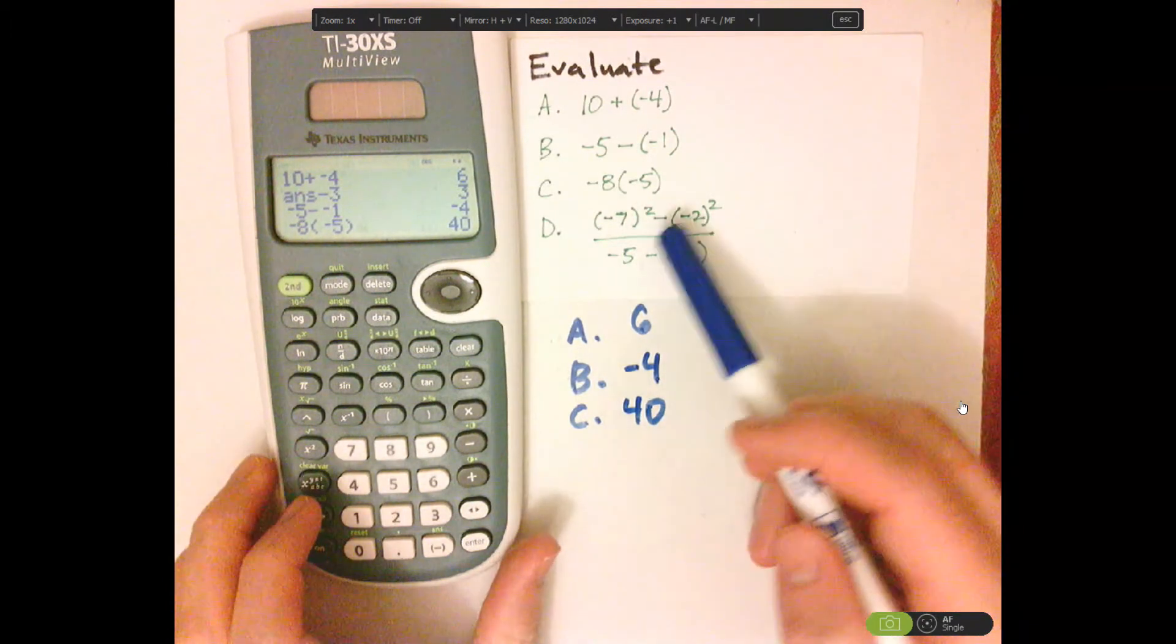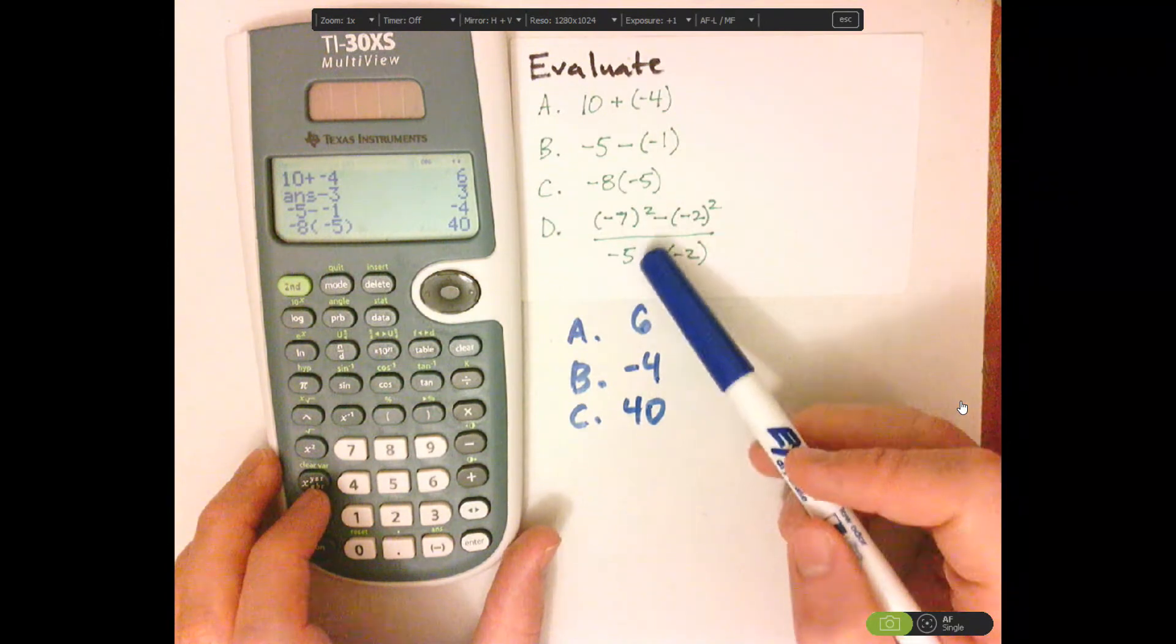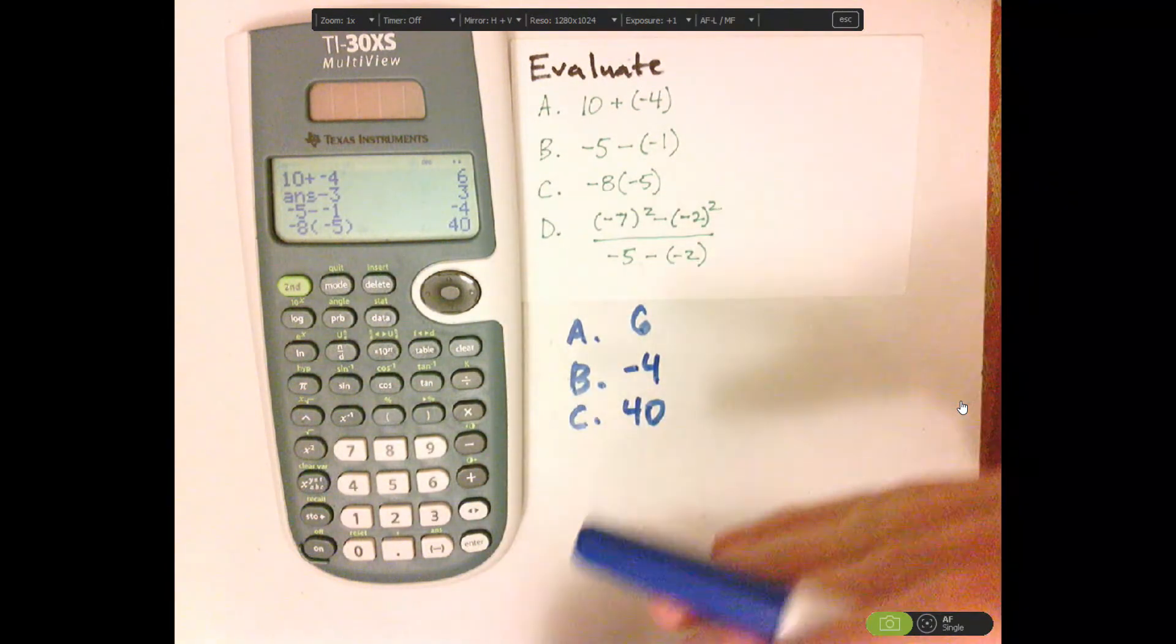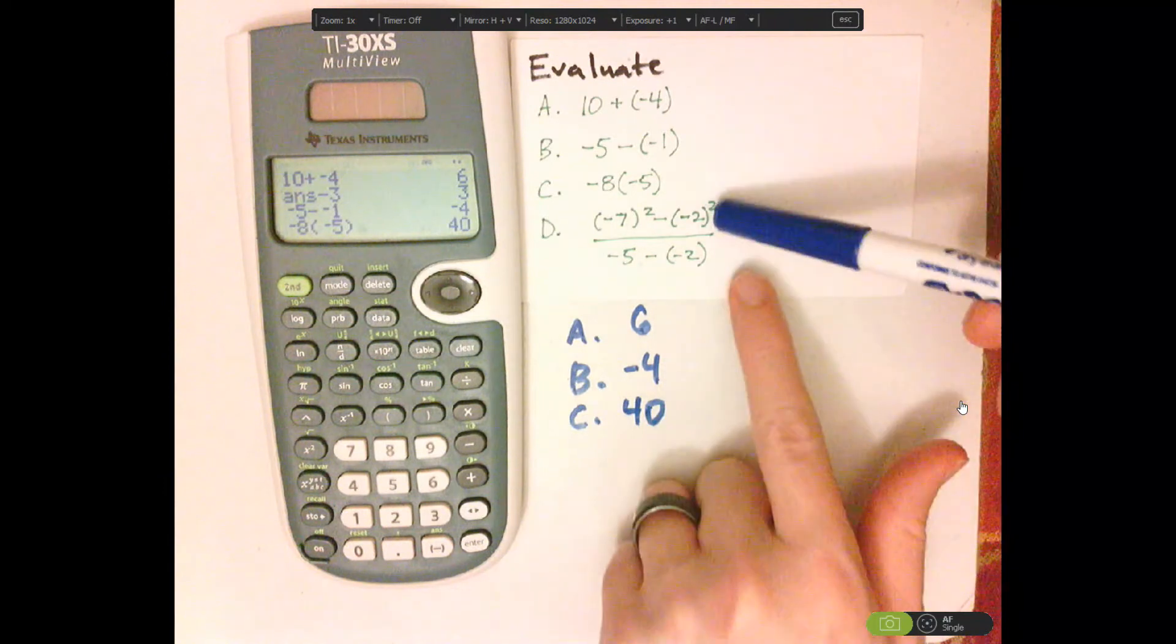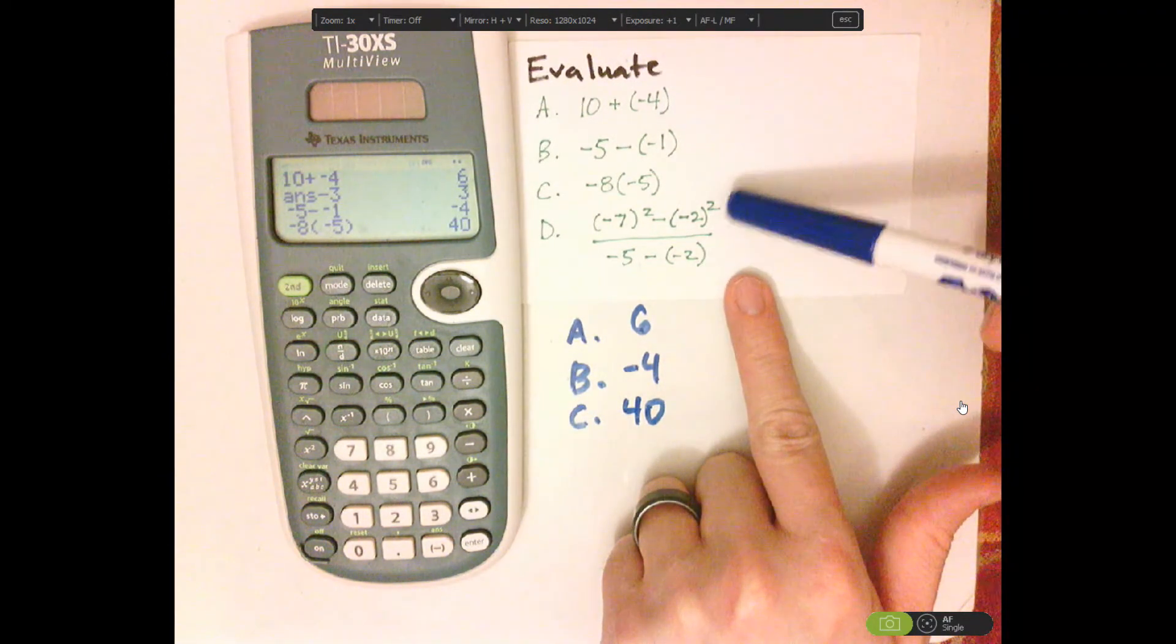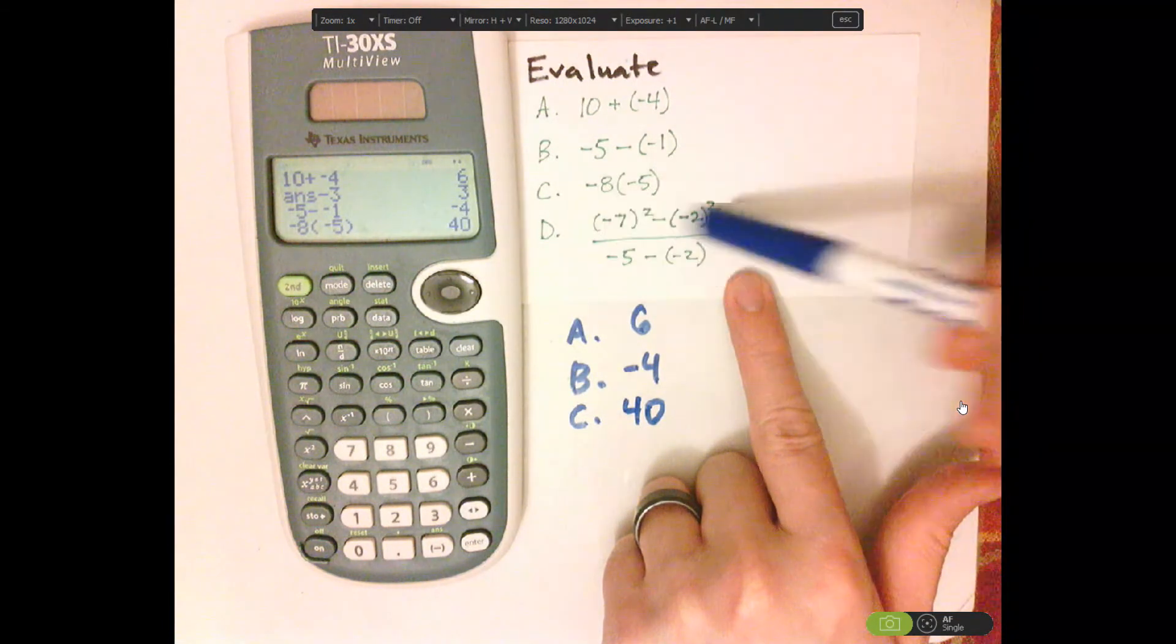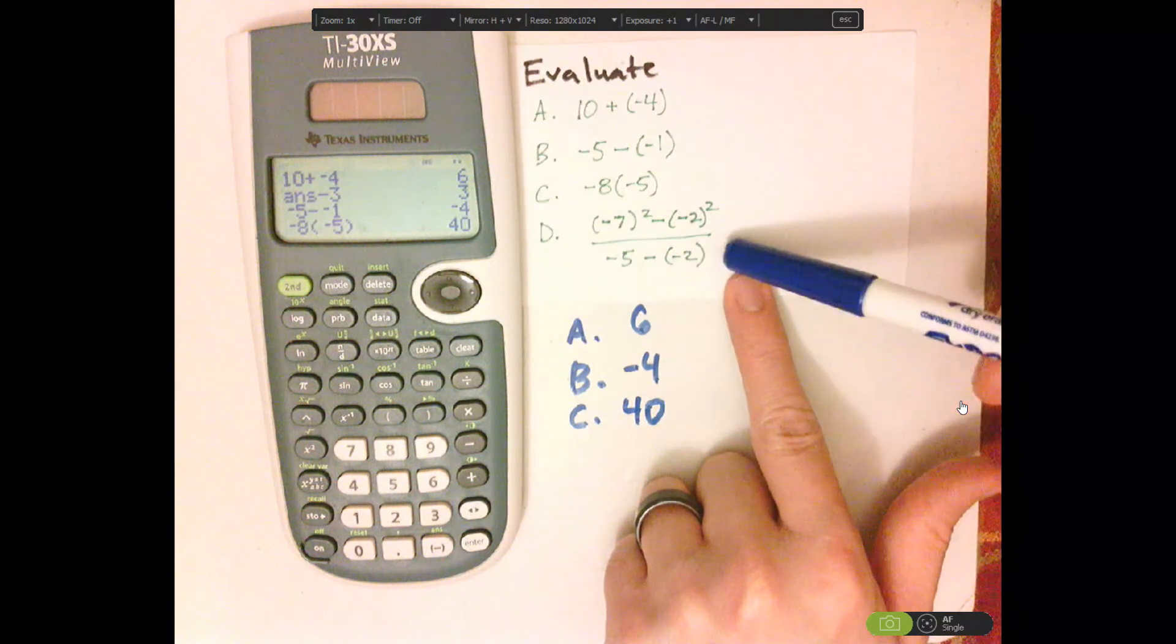All right, now with this one, the numerator and denominator, that fraction bar is actually acting like a grouping symbol, separating the numerator and denominator. So what I would want to do is put parentheses around the numerator and around the denominator.